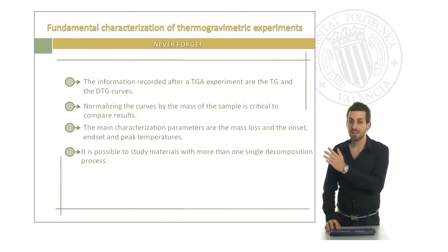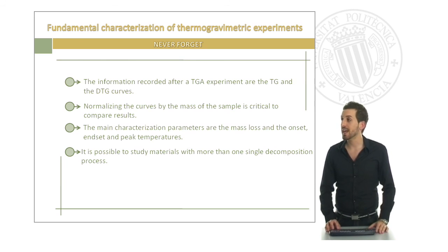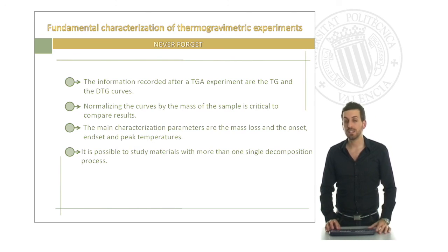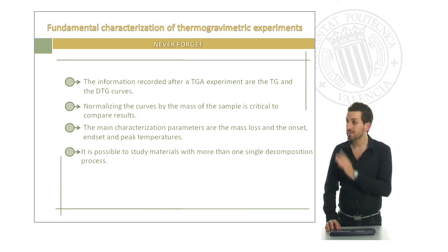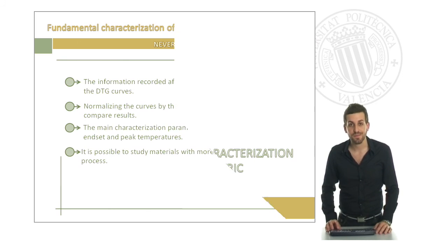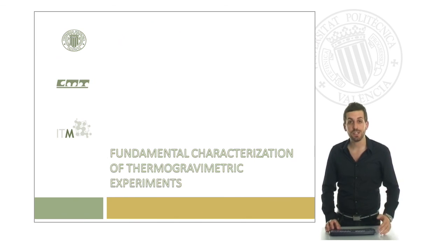Keep in mind what we have seen along this presentation. First of all, we've seen which is the information recorded after a TGA experiment, which are the TG and DTG curves. Then, we have given you an advice. You have to normalize the curves by the mass of the sample in order to compare different results for different samples or materials. Then, the main characterization parameters are the mass loss, the onset, endset, and peak temperatures. And finally, don't forget that it is possible to study different materials with more than one single decomposition process. Now, it's your time to apply all this knowledge in your analysis.